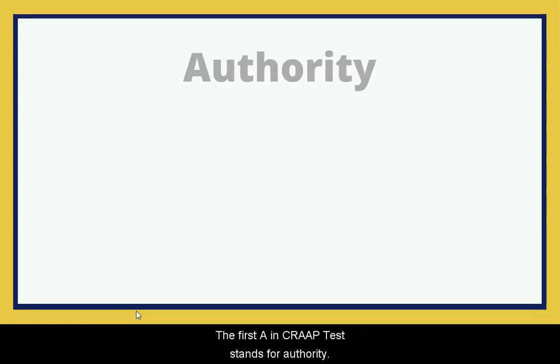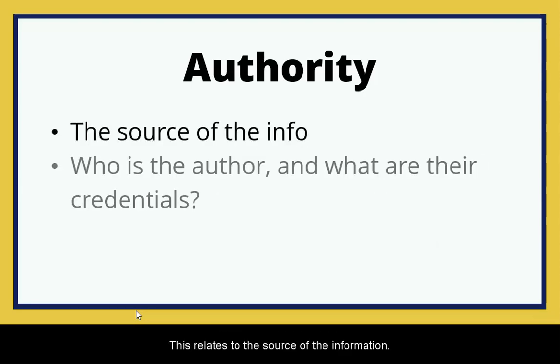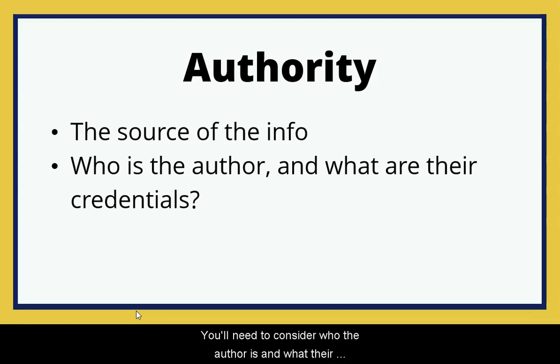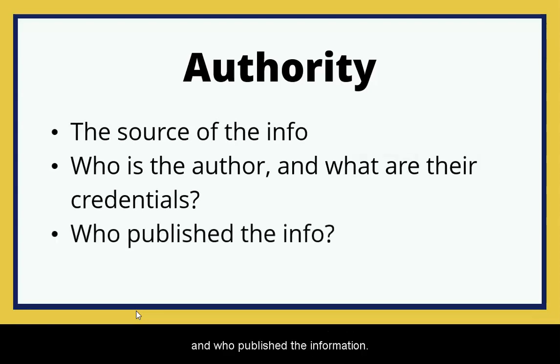The first A in the CRAP test stands for authority. This relates to the source of the information. You'll need to consider who the author is and what their credentials are, and who published the information.